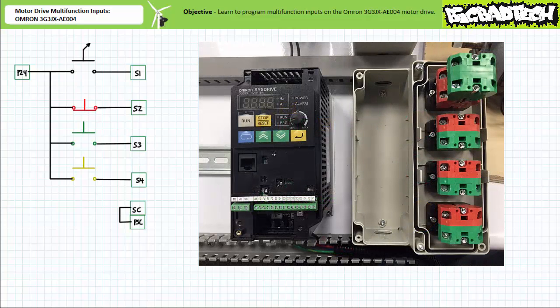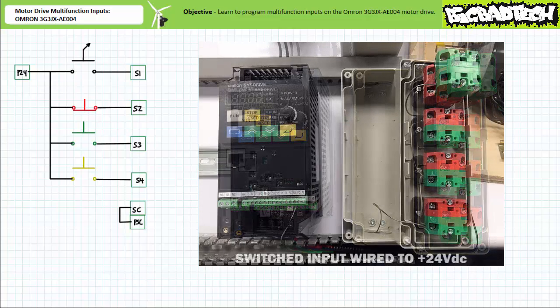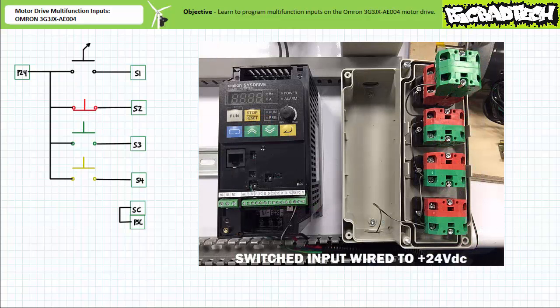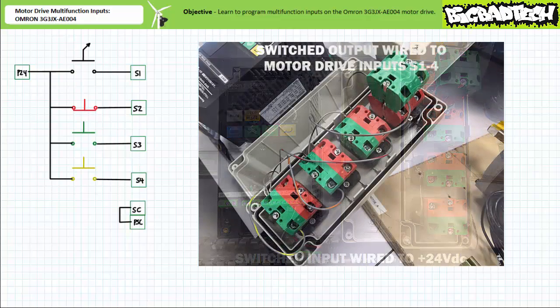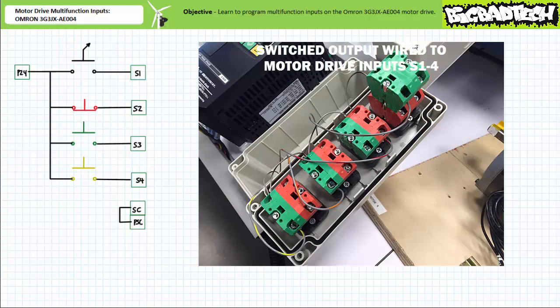Let's wire them up top to bottom: normally open selector switch, normally closed red push button, normally open green push button, normally open yellow push button. Make sure you can positively identify the switch and the terminals. Despite the fact that the push button enclosure is right next door, realize the purpose of this exercise is to remotely control this drive from a different location — this push button enclosure could be in a different room, building, state, country, or on a different planet, provided you had wires that long.